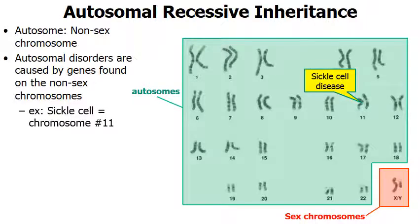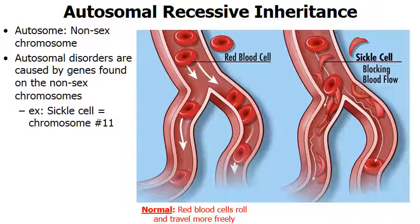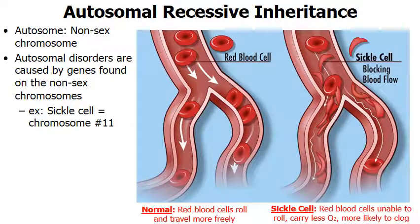Sickle cell disease is caused by a gene found on chromosome number 11. You can see how sickle cell disease can actually affect the person. On the left, we have a vein that branches off left and right, with normal shaped red blood cells able to freely roll and travel through these veins and carry oxygen throughout the body. But on the right, notice the sickle-shaped red blood cells — they're kind of shaped like bananas. This causes the red blood cells to be unable to roll as efficiently; they carry less oxygen and are more likely to get stuck and clogged in the twists, turns, and branching of your veins and arteries. So people with sickle cell tend to suffer from poor blood circulation.